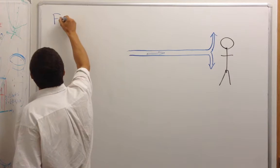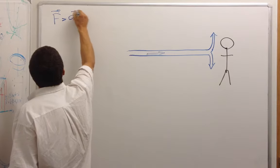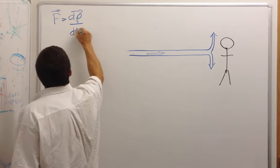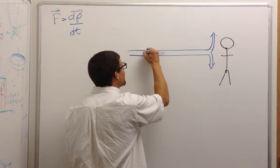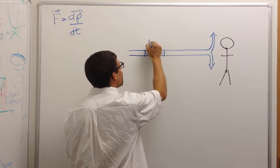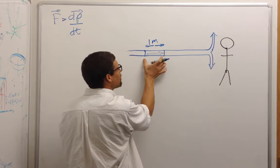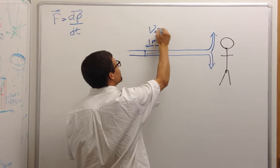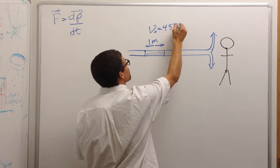Force can also be thought of as the rate of change of momentum. Why is this helpful? Well, we can take a chunk of water here. Let's say one meter. We can calculate its momentum because V-naught is equal to 45 meters per second.